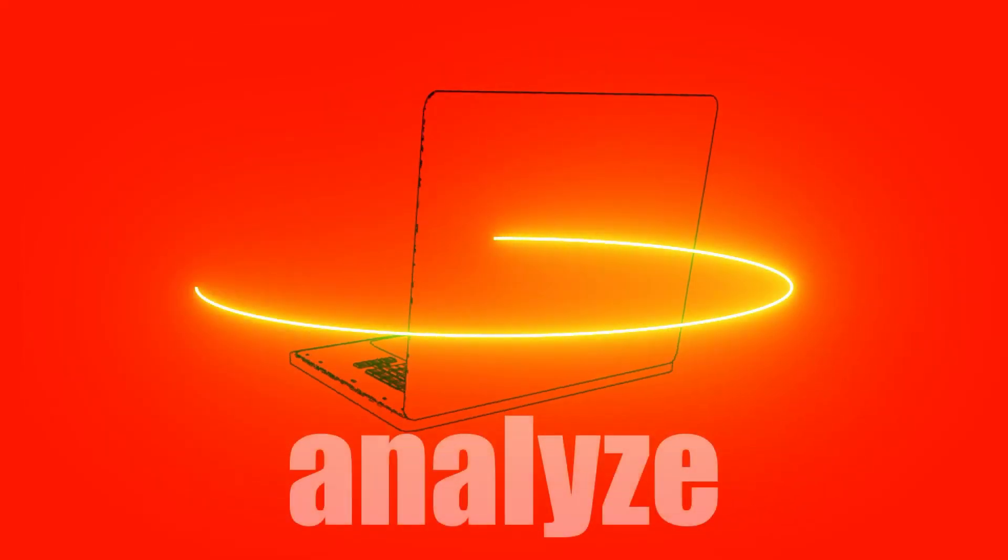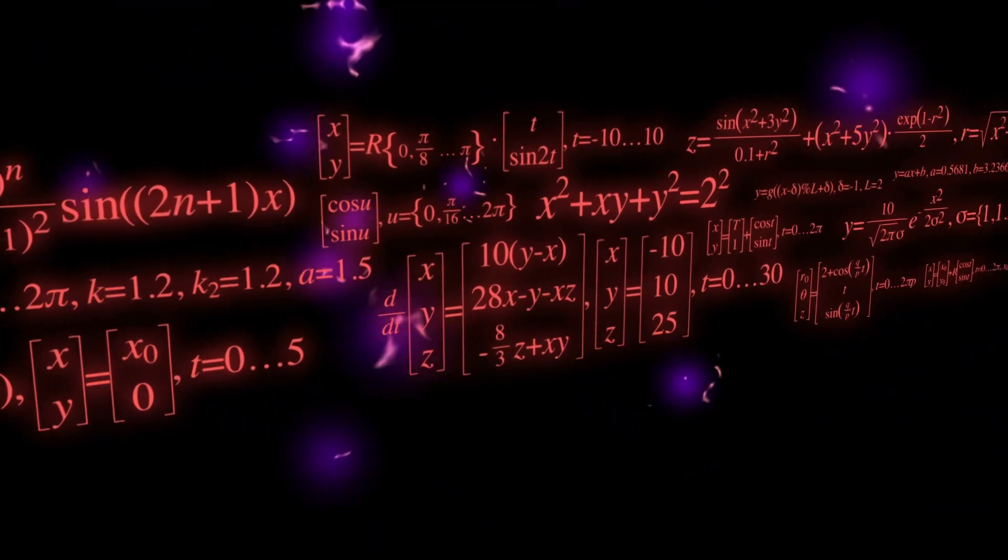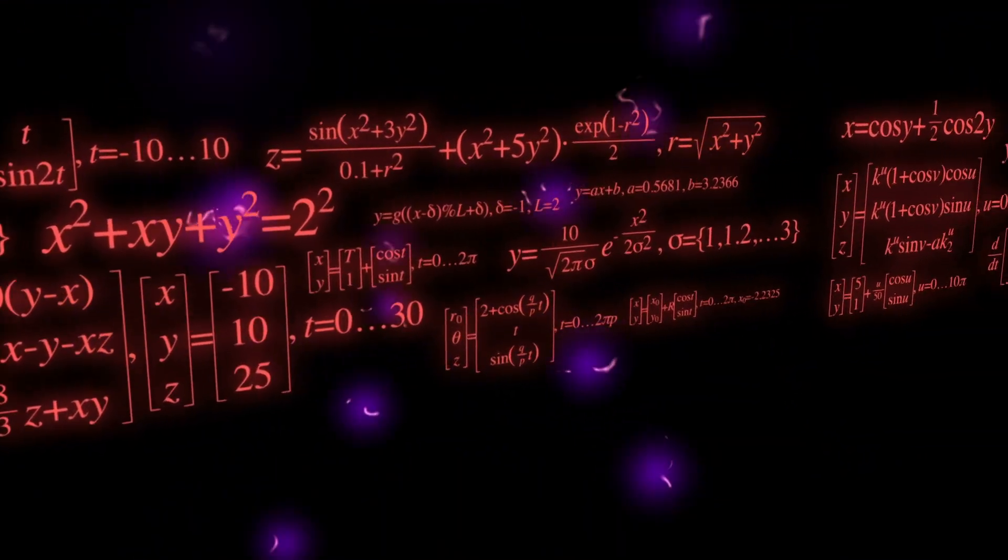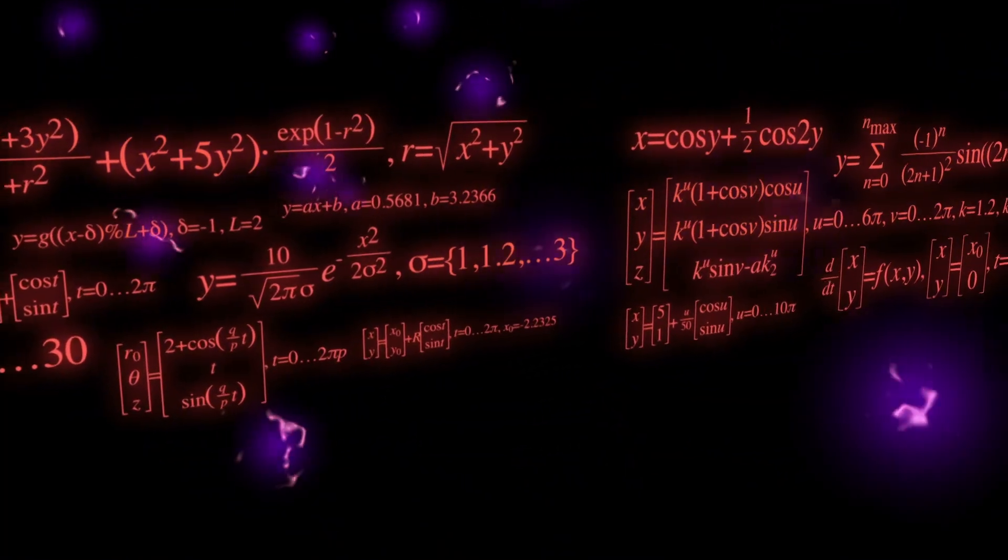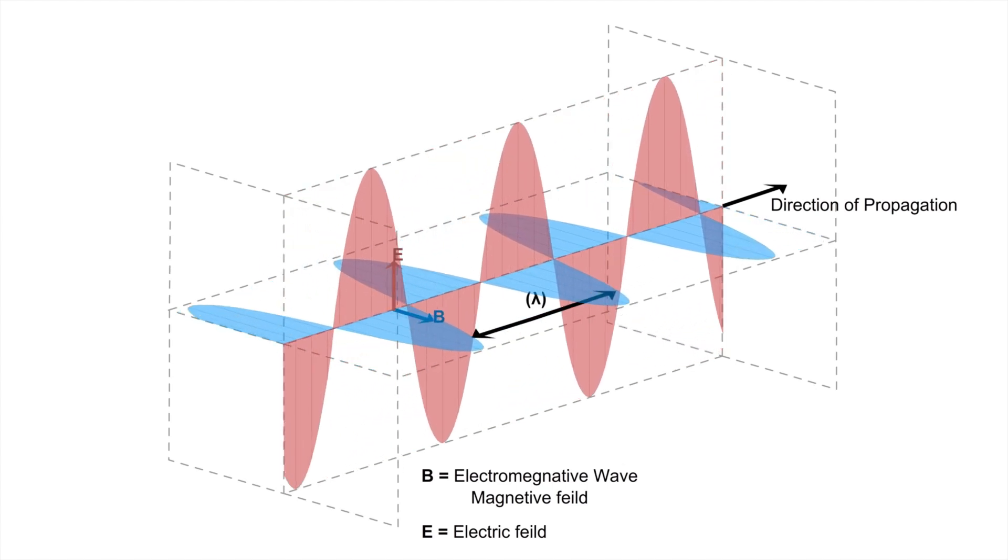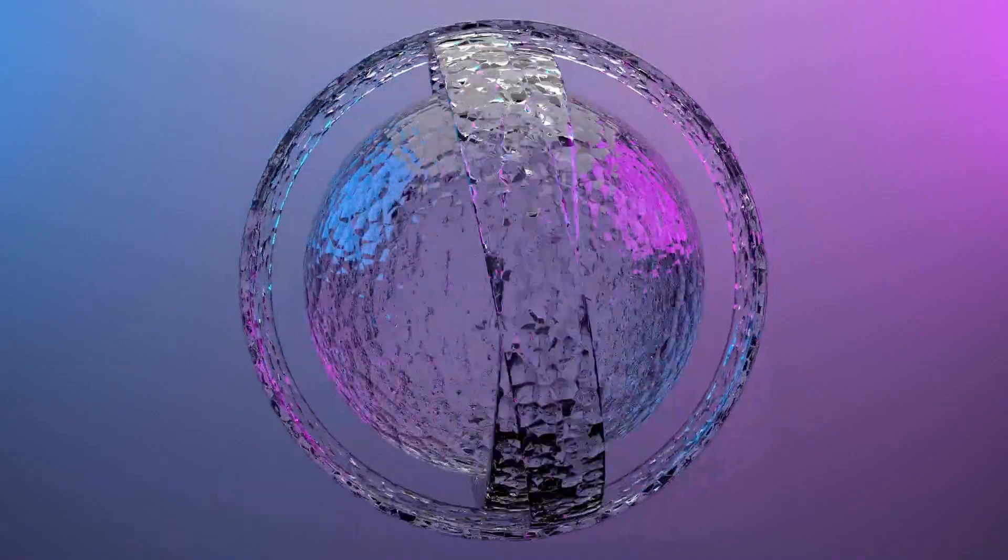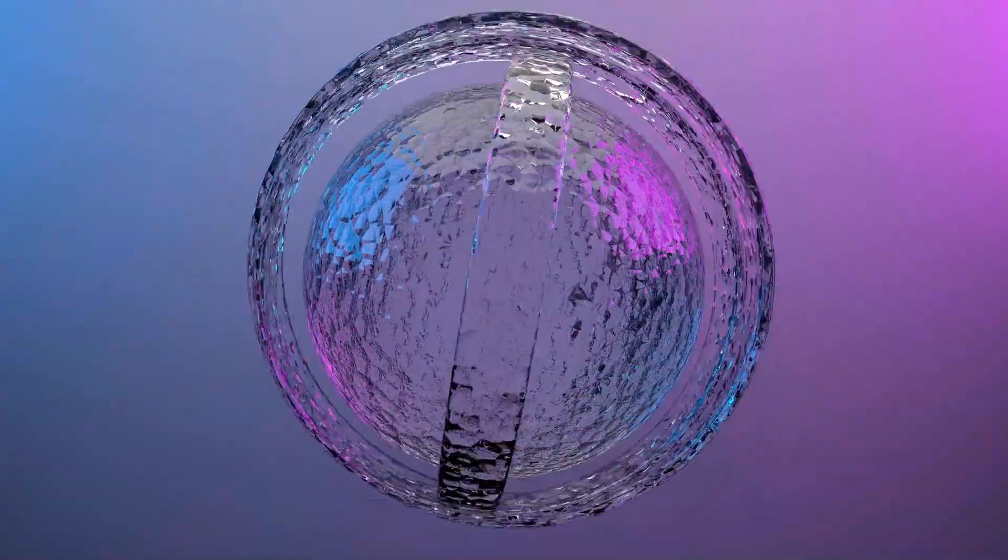There's something haunting about the timing. Out of all the centuries Betelgeuse has burned, why now? Why would it begin to unravel at the exact moment in history when humanity possesses the tools to observe it in such detail? For millennia, it was just a point of red light in the sky. Mysterious. Untouchable. But now, as the James Webb telescope stares through the dust, we're seeing it up close, in its final days. It feels deliberate, as if the star has been waiting for someone. For us.